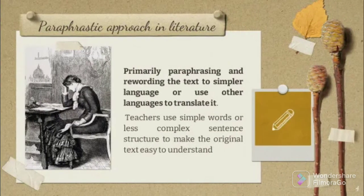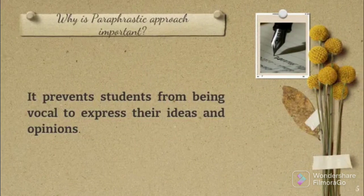Another point about the paraphrasing approach in literature is that it is primarily about paraphrasing and rewording the text into simpler language or using other languages to translate it. Teachers use simple words or less complex sentence structures to make the original text easy to understand. The importance of the paraphrasing approach is that it helps students develop a better understanding of the text by supporting them in expressing their ideas and opinions.